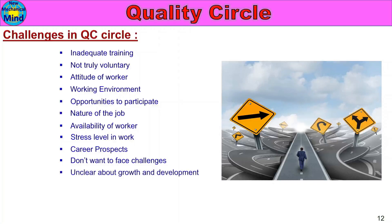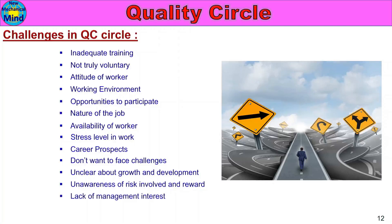Members may have an unclear idea about growth and development. Unawareness of risk involved — team members may not know the resources involved in QC Circle activities. Management interest is also key — if management allows and supports team members to meet and participate in QC Circle, the circle will succeed. Quality circles are not really empowered to make decisions.